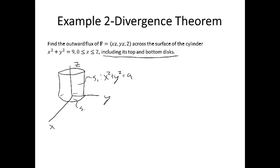Then you have surface S2, which is the cap on the bottom — that's part of the plane z = 0. And then you've got surface S3, which is the cap on the top, which is part of the plane z = 2. Therefore, your surface S is a closed surface — you're actually enclosing a region E in space, and we can use the divergence theorem.